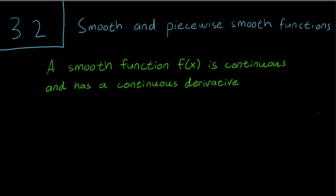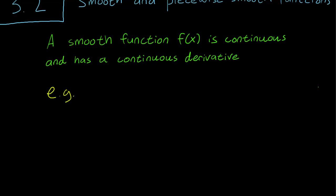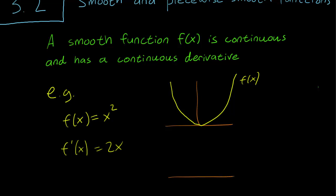Let's go through an example. Perhaps the easiest example would be polynomial functions. Let's try fx equals x squared. This is a continuous function. If you draw the graph, it simply looks like this and you don't have to lift your pen while drawing it. And the derivative is simply going to be 2x, which is again a continuous function.